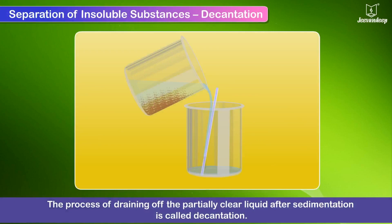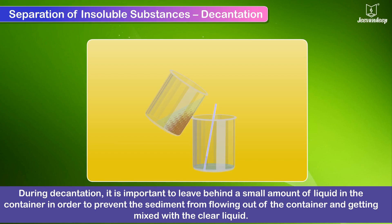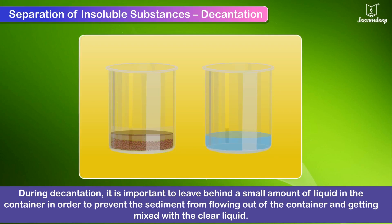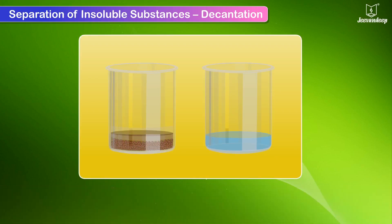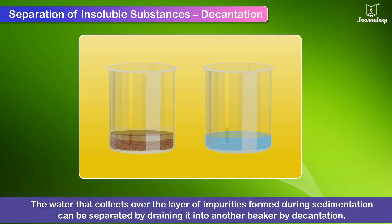Decantation: the process of draining the partially clear liquid after sedimentation is called decantation. During decantation, it is important to leave behind a small amount of liquid in the container in order to prevent the sediment from flowing out and getting mixed with the clear liquid. The water that collects over the layer of impurities during sedimentation can be separated by draining it into another beaker by decantation.